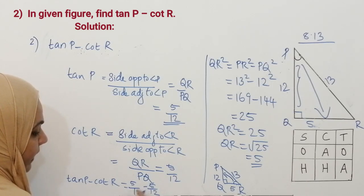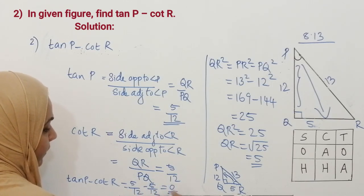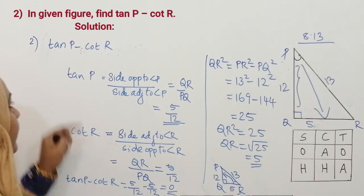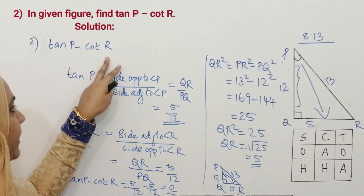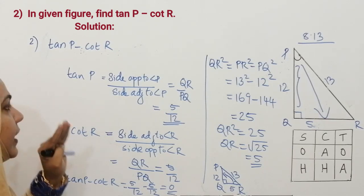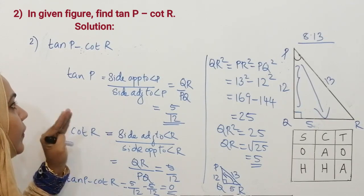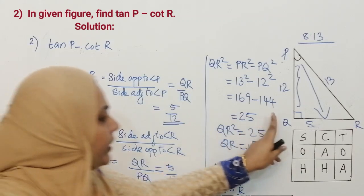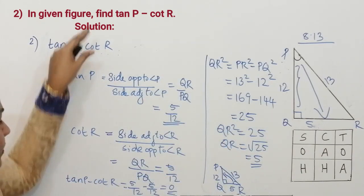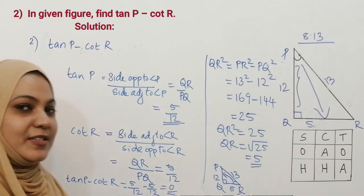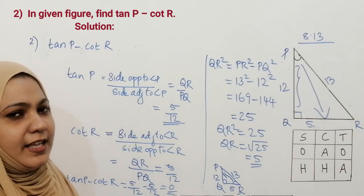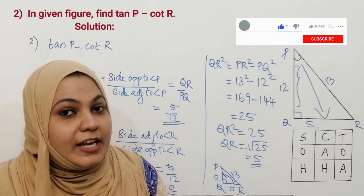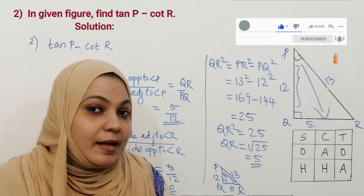We got the answer for the second question — 0. In this question there are two reference angles, so while solving be very careful or you will get confused. For the first part draw one triangle, and for the second part draw another triangle — that way you can score full marks. If you follow my teaching, please like, share, subscribe, and put valuable comments in the comment box.